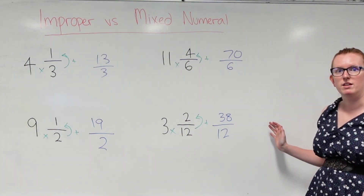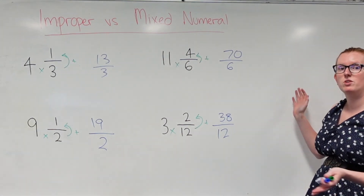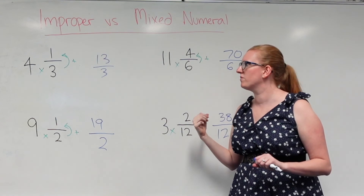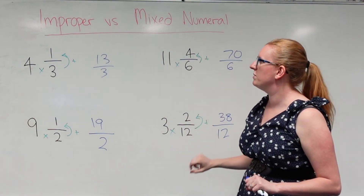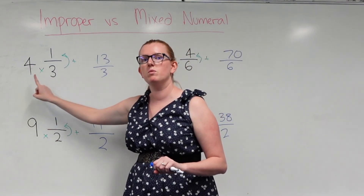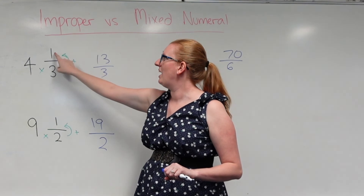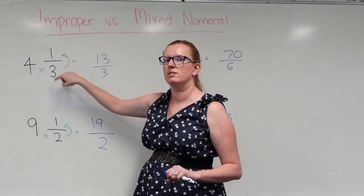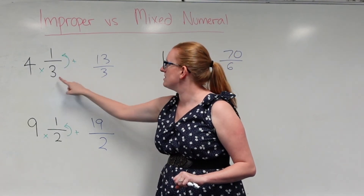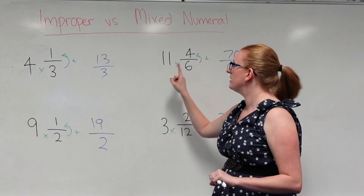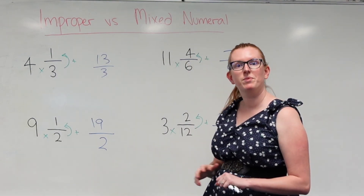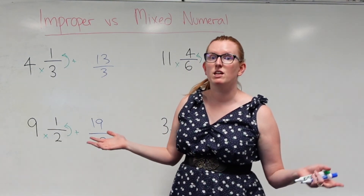And there we have it. To convert mixed numeral fractions to improper fractions, multiply the number out the front with the denominator and then add the numerator. But your denominator always stays the same — the denominator does not change. Thank you for watching.